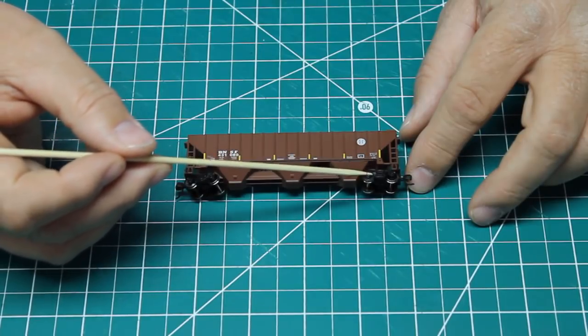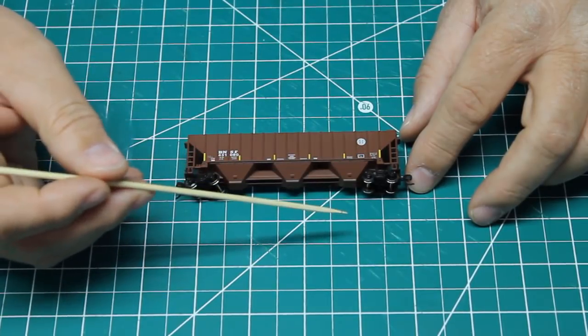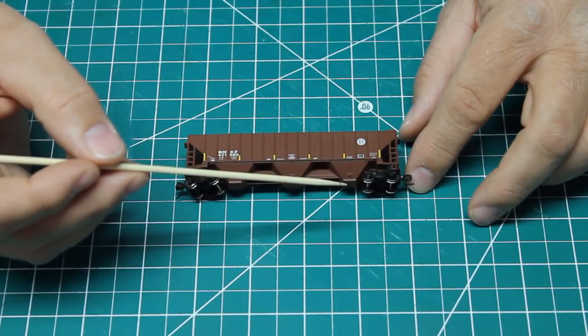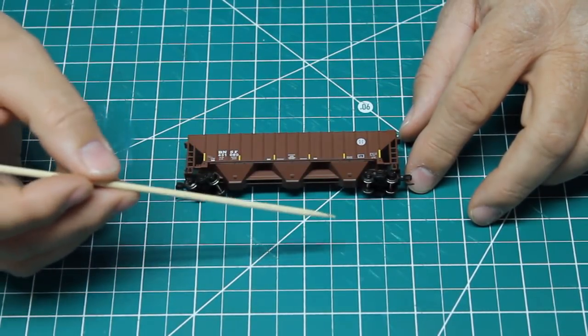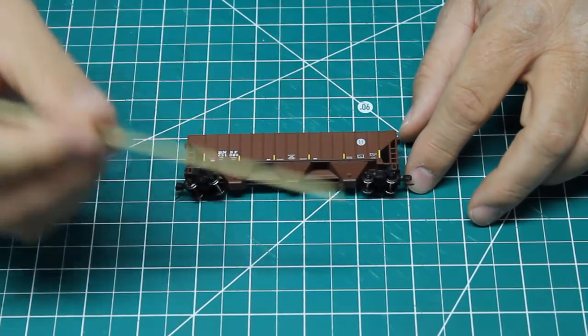The second thing you need to make note of is the size of truck. And I know some real railroaders are going to groan when I say this, because that's a way oversimplification. But for the sake of model railroading, for the most part, this is your rule of thumb.